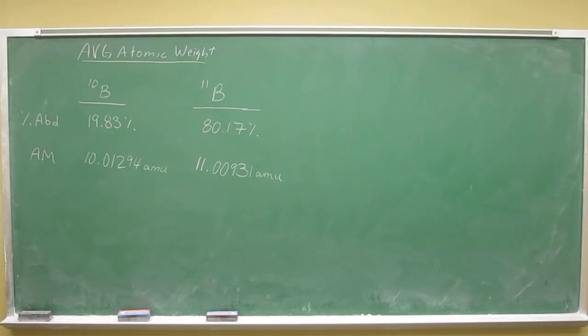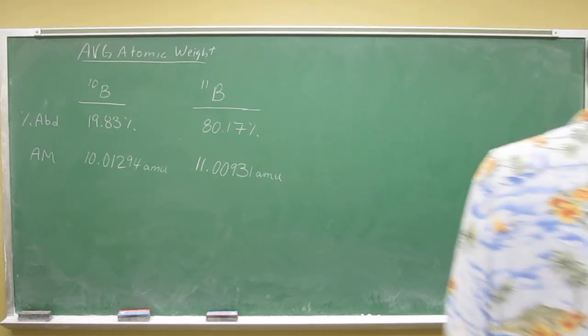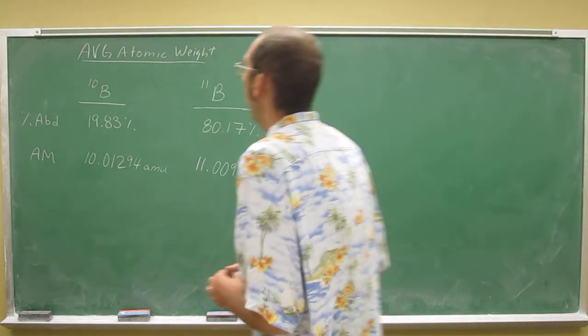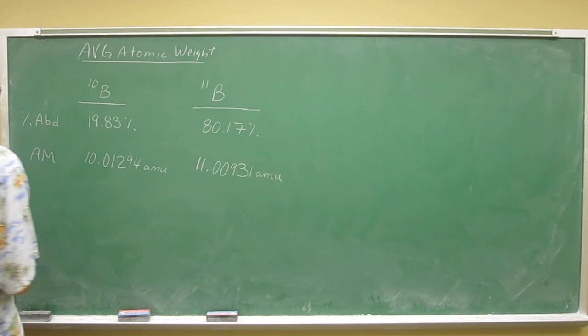Okay, so let's do another one of these. Calculate the average atomic weight of boron. This one is interesting because it's telling you these are the two main isotopes of boron, the two isotopes of boron that exist,